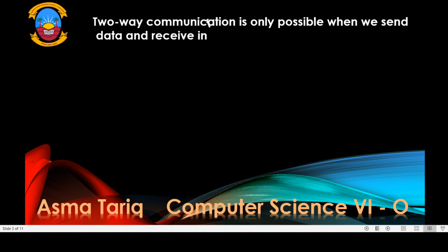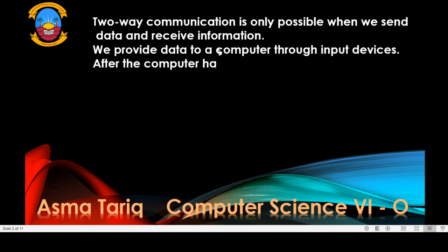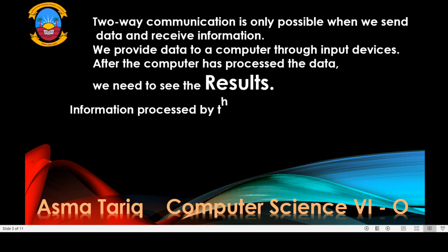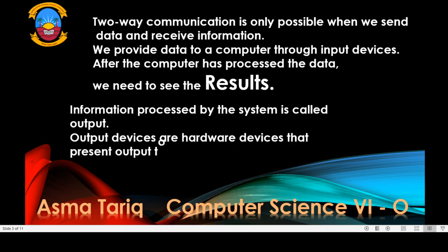Communication is only possible when we send data and receive information. We provide data to a computer through input devices. After the computer has processed the data, we need to see the results. Information processed by the system is called output. Output devices are hardware devices that present output to the user in human-readable form.